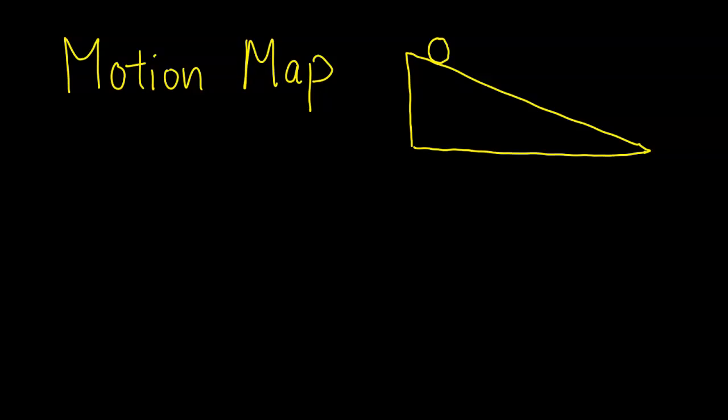In this video we're going to be looking at motion maps and motion graphs for objects that are accelerating. We're going to start with a ball on a ramp that's rolling down. As it rolls down it's going to be speeding up.